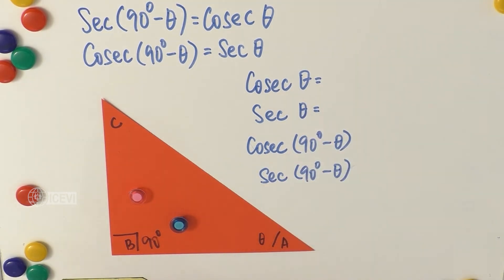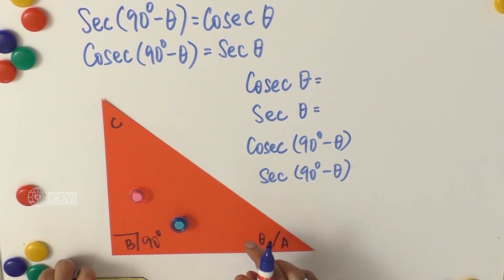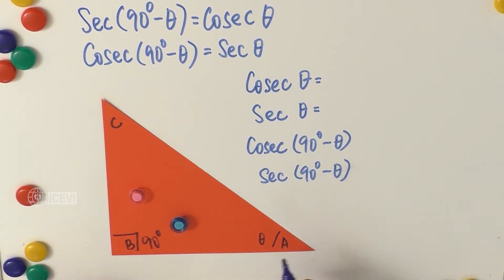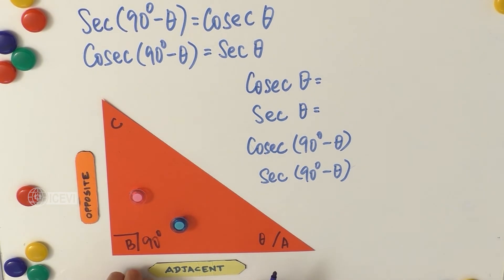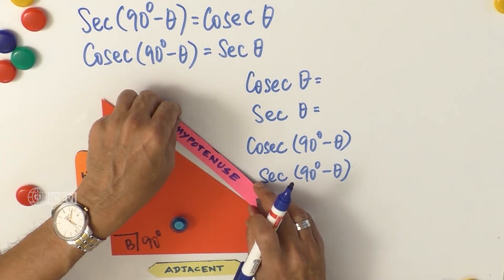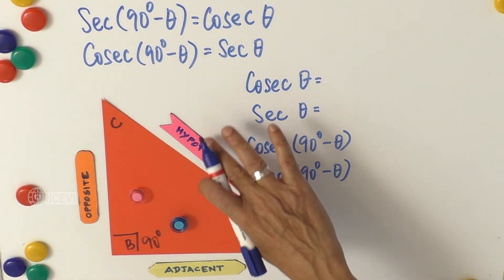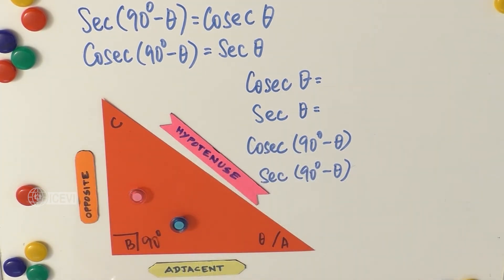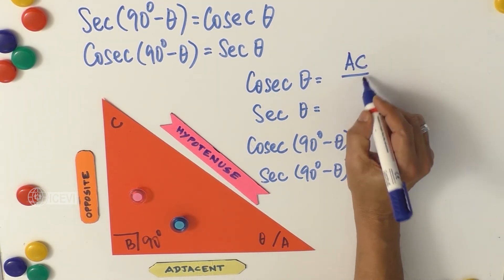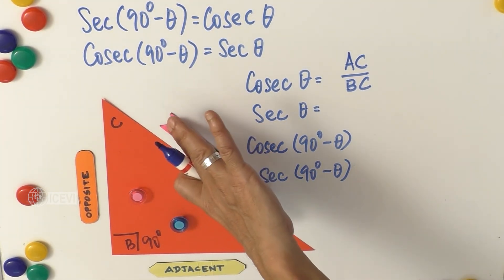What is cosecant theta? In a right angle triangle, to find trigonometric ratios we use the side opposite to theta as the opposite side, the base as adjacent, and the side opposite to 90° as the hypotenuse. Cosecant theta is hypotenuse divided by the opposite — that is AC divided by BC.